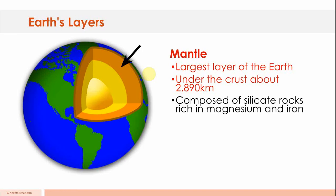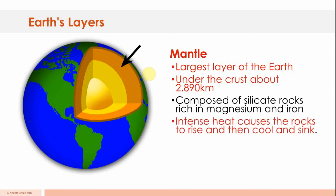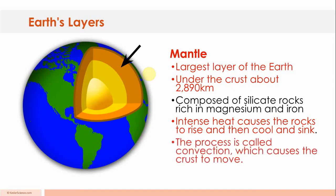Composed of silicate rocks, rich in magnesium and iron. Intense heat causes the rocks to rise, then cool and sink, like a lava lamp or a hot air balloon. The process is called convection, which causes the crust to move. Convection currents. Something we talked about in our labs. Average temperature? 3,000 degrees.